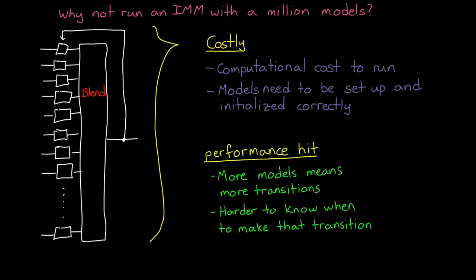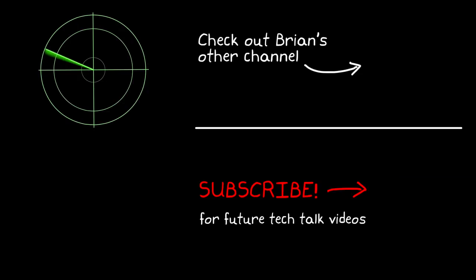And something else to keep in mind is that everything I've just explained is what's necessary to track a single object. Our problem gets even harder when we expand this to tracking multiple objects at once. And that is what we'll cover in the next video. So if you don't want to miss future Tech Talk videos, don't forget to subscribe to this channel. Also, if you want to check out my channel, Control System Lectures, I cover more control theory topics there as well. I'll see you next time.